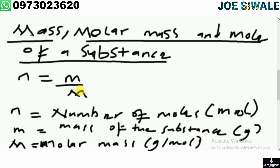So you say N equals small letter m divided by capital letter M, where small letter N is the number of moles, small letter m is the mass of the substance, and capital letter M is the molar mass. Let us look at the first example.